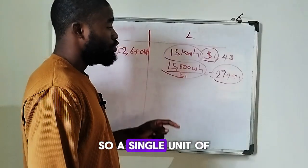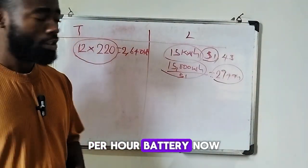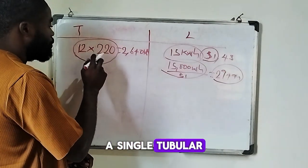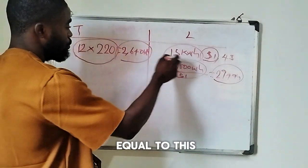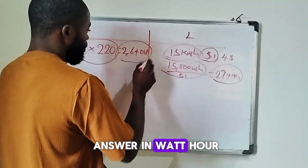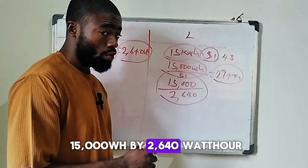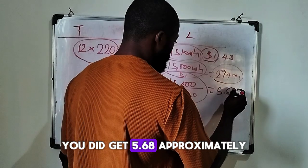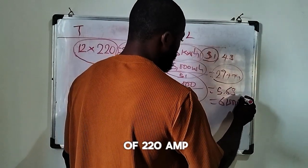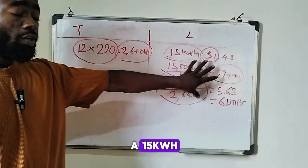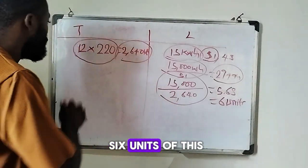So a single unit of a 15 kilowatt-hour lithium battery contains about 294 ampere-hours. On the tubular side, a single 12-volt 220Ah tubular battery equals 2,640 watt-hours. To find how many are needed, divide 15,000 watt-hours by 2,640 watt-hours, which gives 5.68 — approximately 6 units of 220Ah tubular battery.